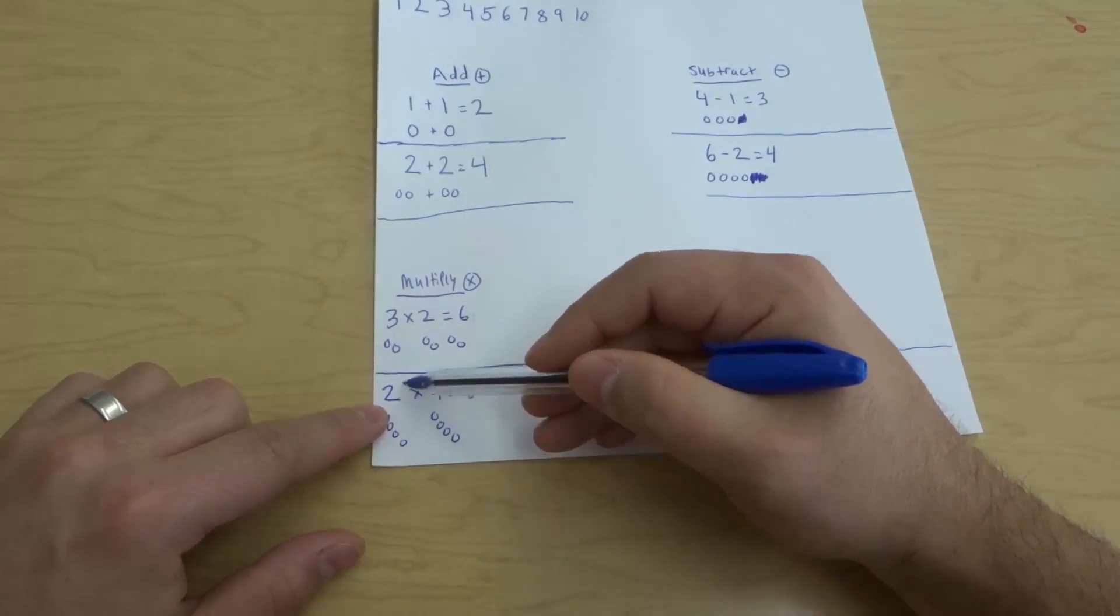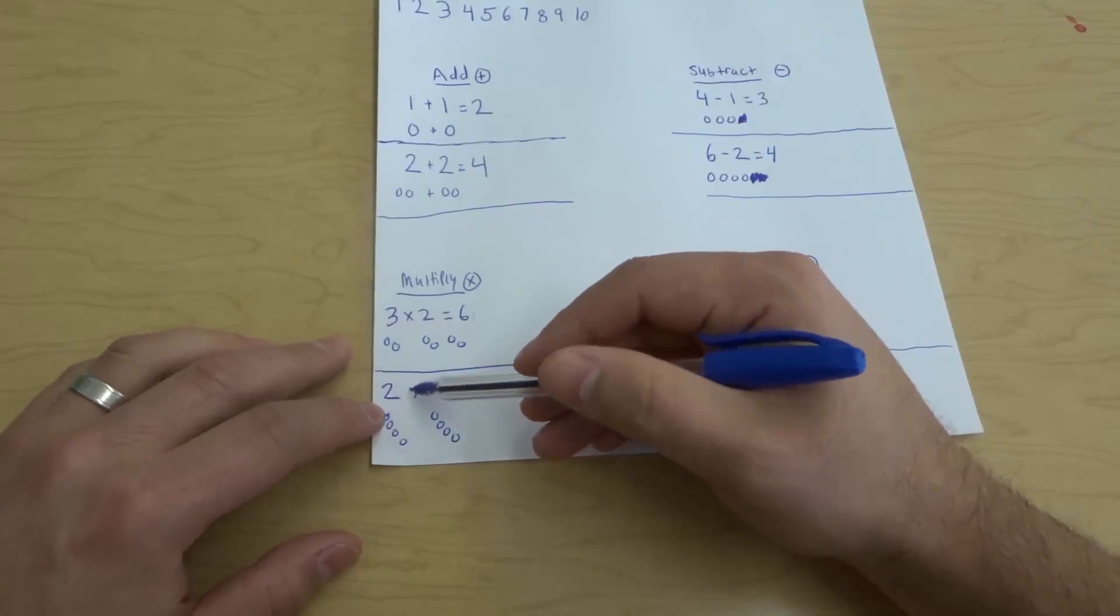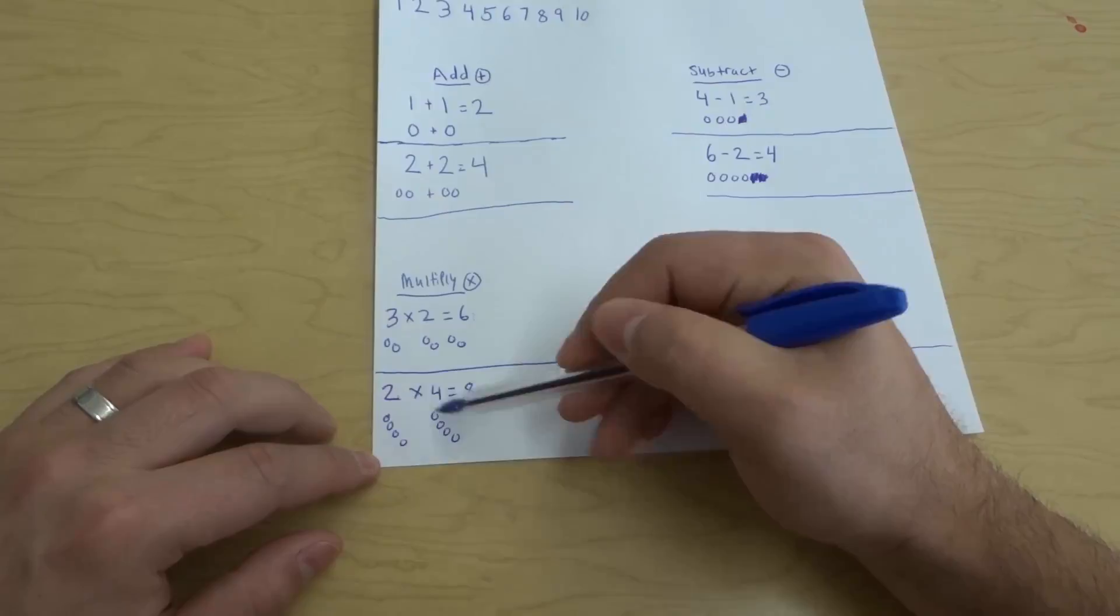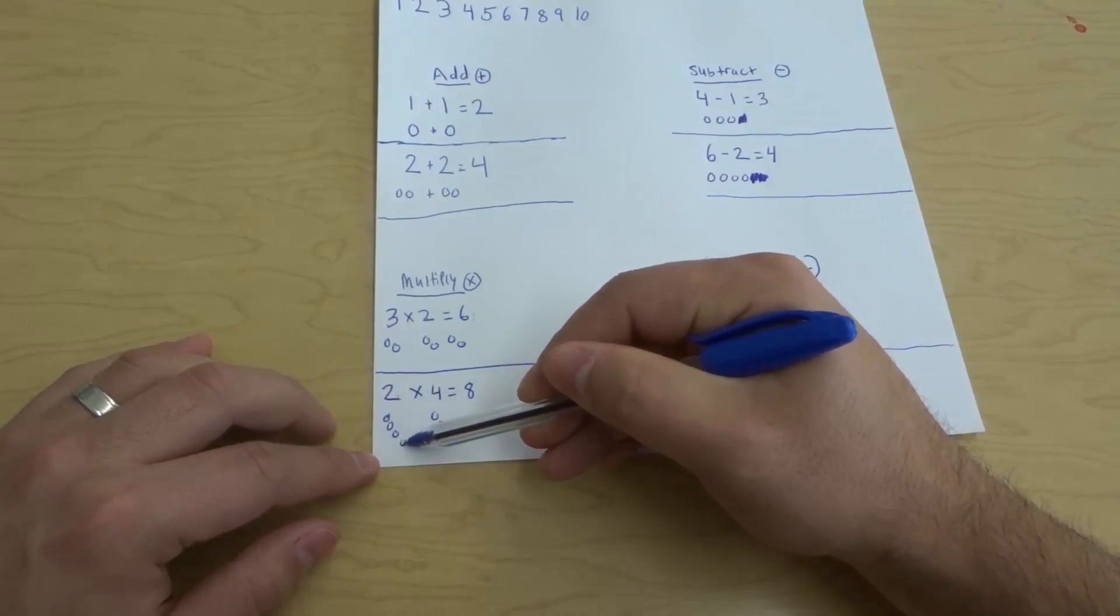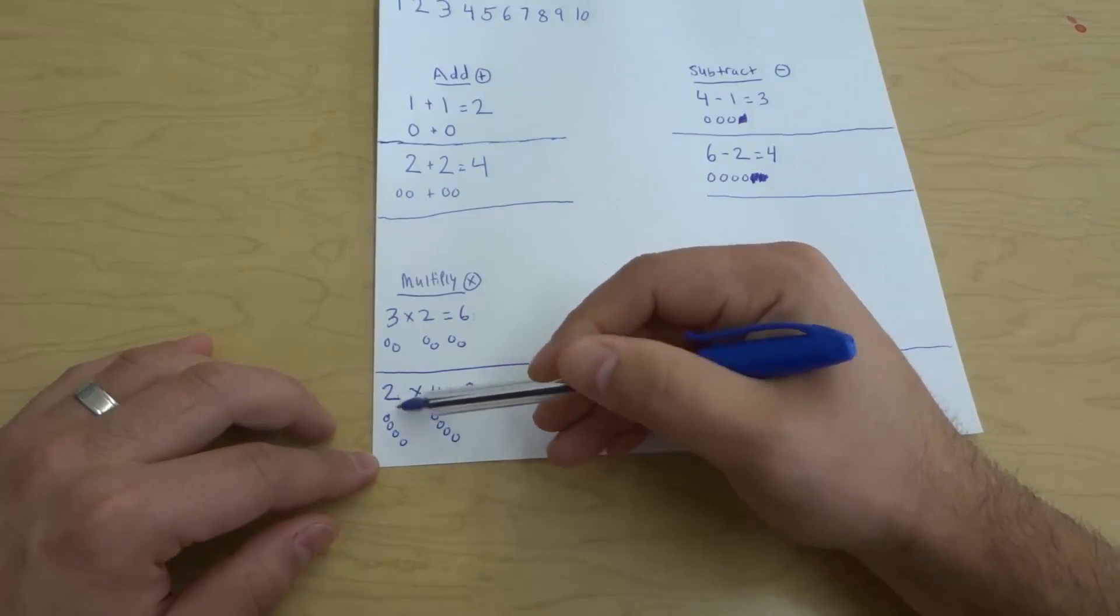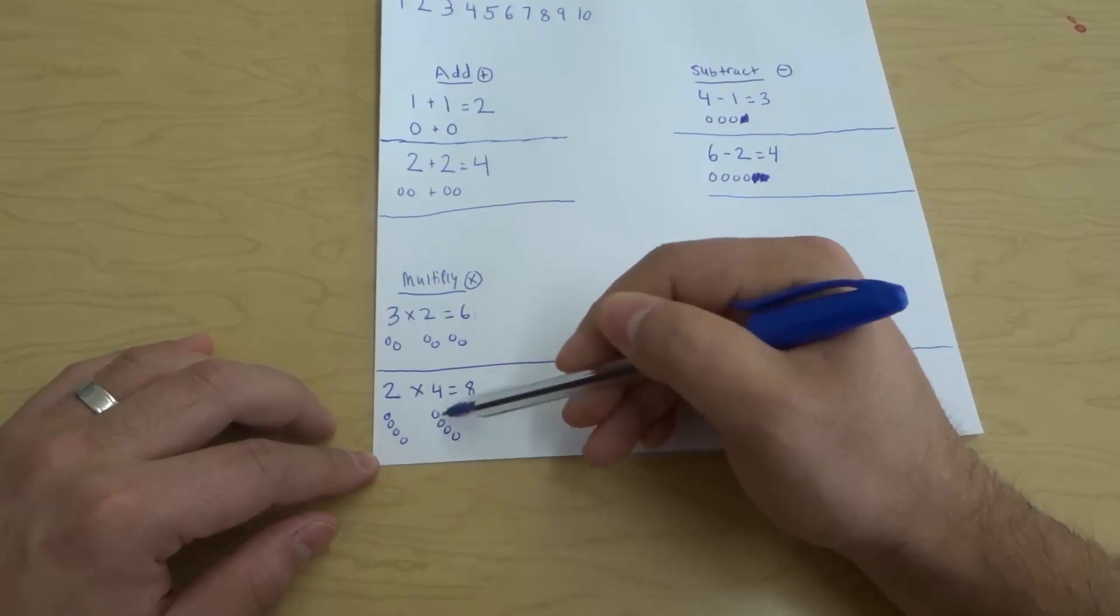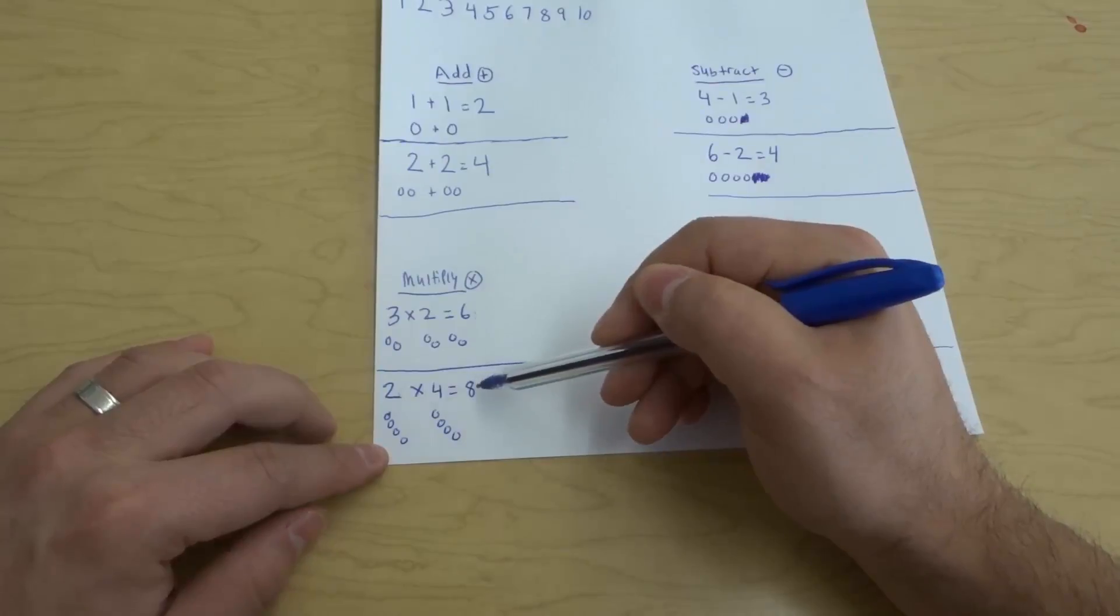The next equation we have here is 2 times 4. So once again, we have 2 groups with 4 in each. 2 groups with 1, 2, 3, 4 in each. We count them all together: 1, 2, 3, 4, 5, 6, 7, 8. That's our total number. 2 times 4 equals 8.